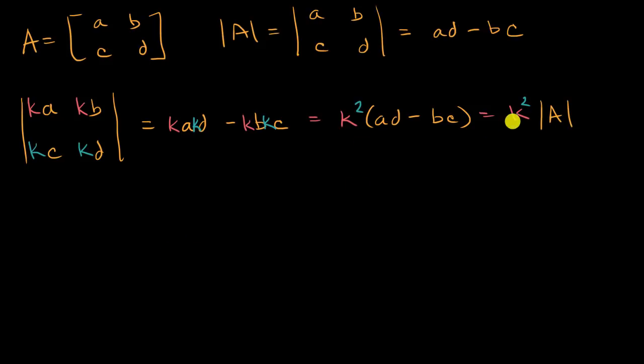And that can be extended to a generalized property that if I have some N by N matrix A, then the determinant of K times that N by N matrix A, when I multiply a constant times our entire matrix, I'm multiplying that constant times all the rows, or you could say all of the elements. Well this is going to be equal to, pause this video, see if you can intuit what this general formula's going to be.